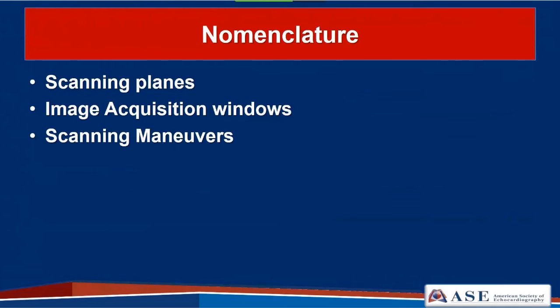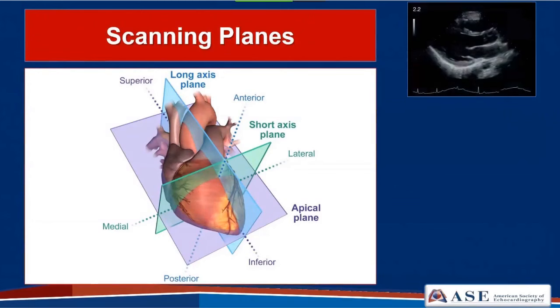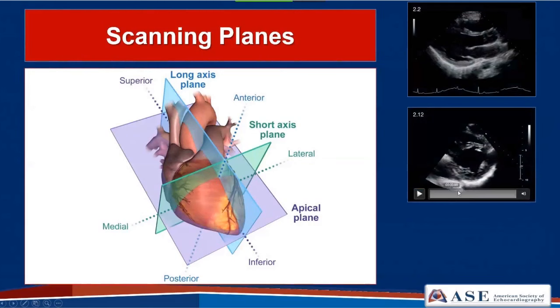We'll begin with discussion of the scanning planes, image acquisition windows, and scanning maneuvers. Reviewing the scanning planes: the long axis is where we acquire our parasternal long axis images along the long axis of the heart from the apex to the great vessel. The short axis plane is a cross section of the left ventricle, showing the heart in a series of axial planes. Then we'll talk about the apical plane, where we see the apical four-chamber view.